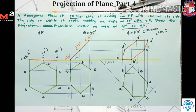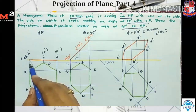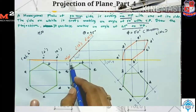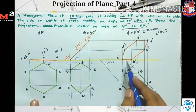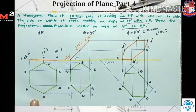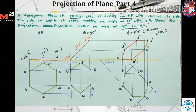Before ending, I check that the side on which the plane is resting is on the reference line. We always check that the side or point on which the plane is resting is always on the reference line. Here A dash B dash, and similarly here A dash B dash, is on the reference line. So here I complete this problem. Thank you.